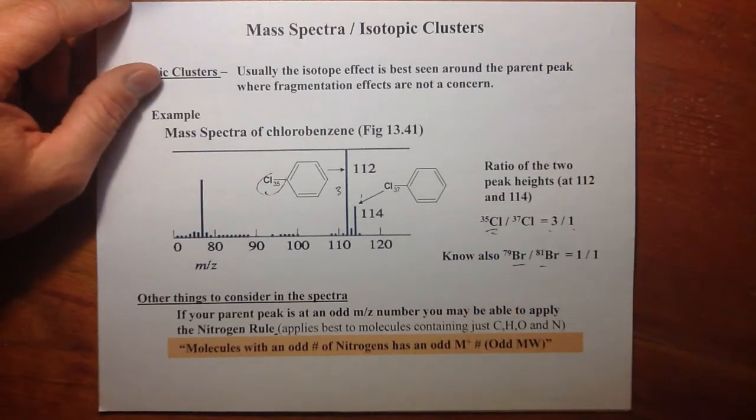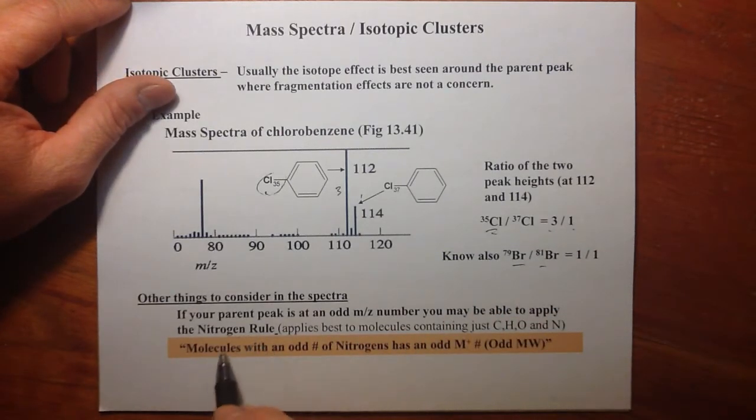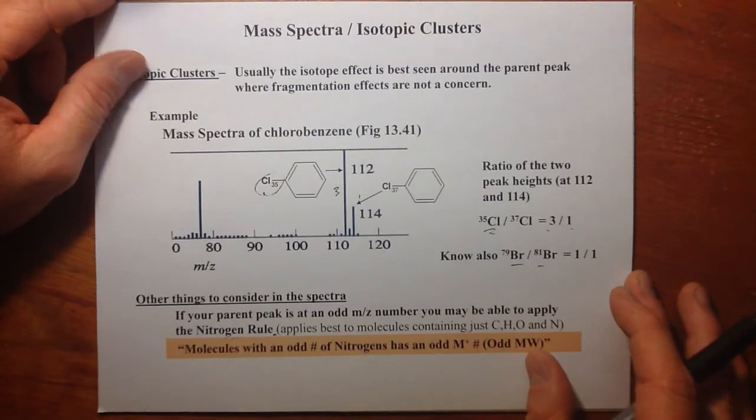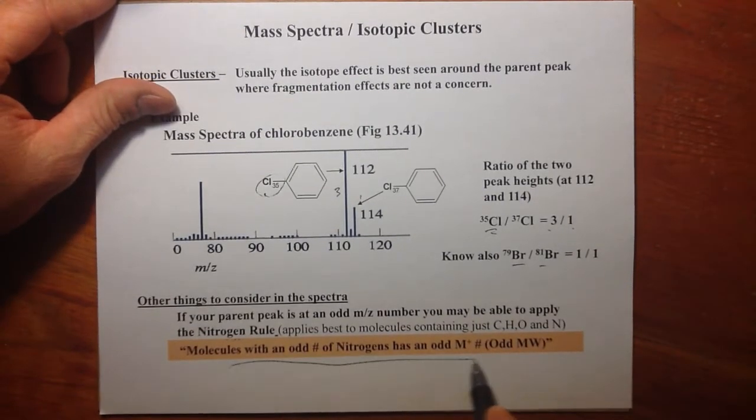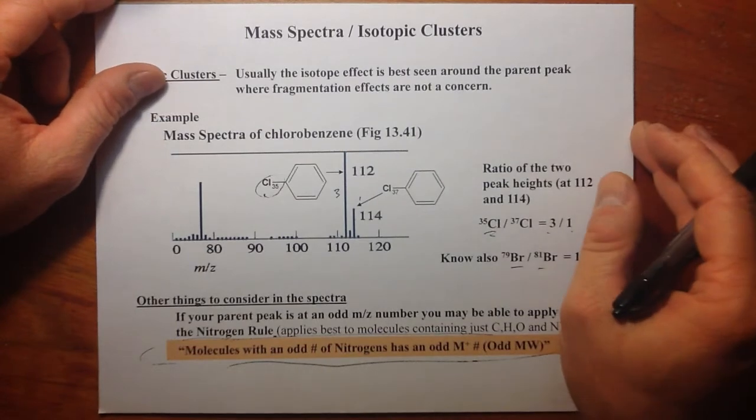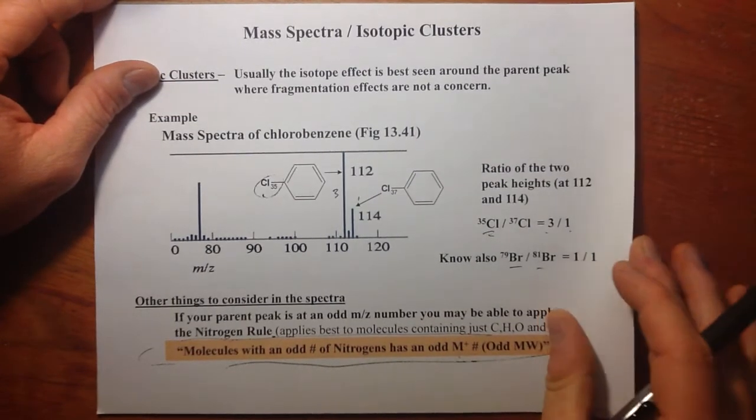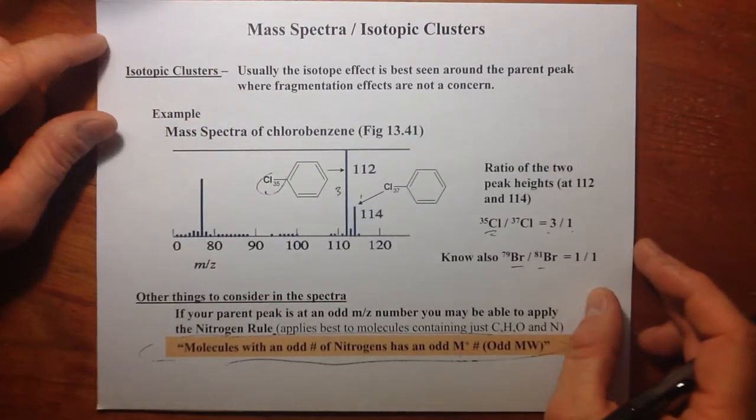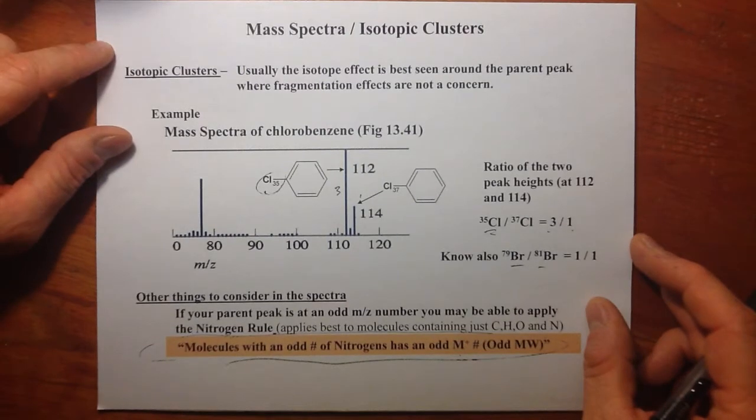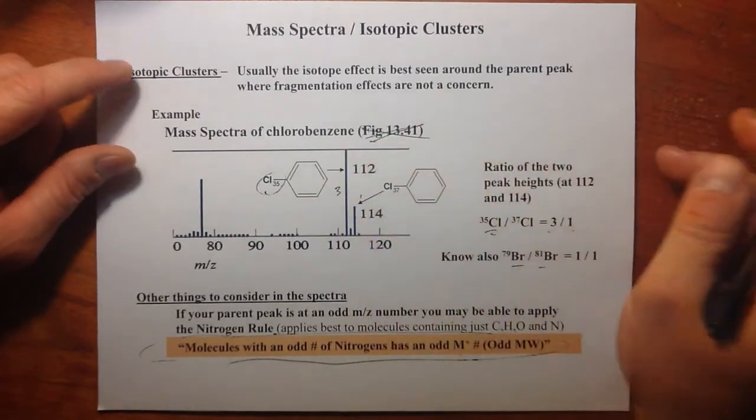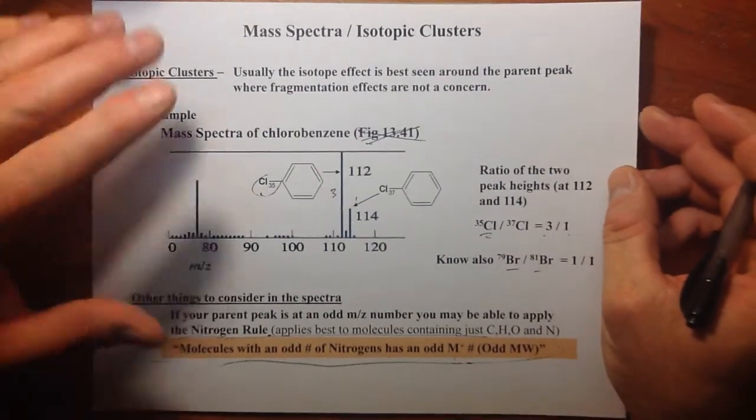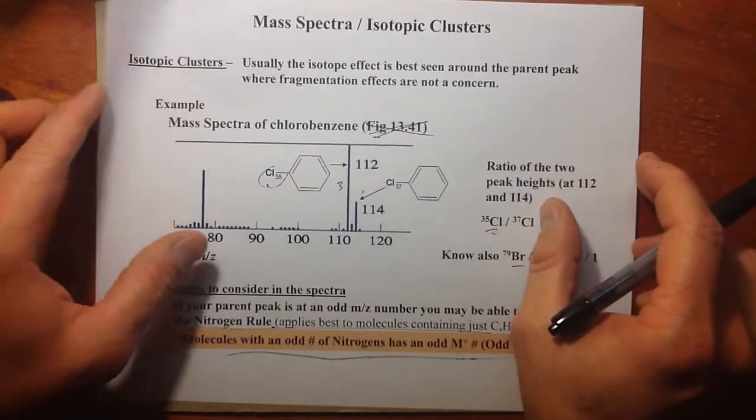One last thing: if we want to look for nitrogen, we can find sometimes an odd number. If we have an odd number of nitrogens, we can find an odd number for the M/z value of our parent peak. Molecules with an odd number of nitrogens has an odd M plus or molecular ion peak. There's a lot more that can be said about isotopic cluster analysis. You may want to check out on your own in a textbook. This is just a very cursory glance at isotopic cluster analysis.